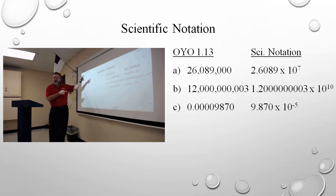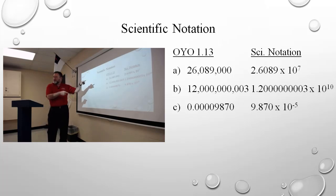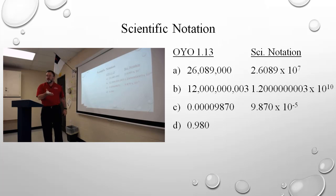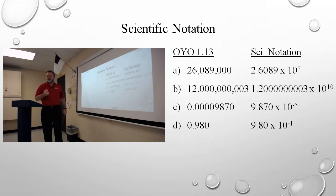This is On Your Own 1-3, so the answers to this are in your book. 0.980 — the 9, the 8, and the trailing 0 are significant. The leading 0 is not. My answer is going to be 9.80 times ten to something. I'm moving the decimal to the right one, which means I make the exponent smaller by 1. So: 9.80 times ten to the negative first.